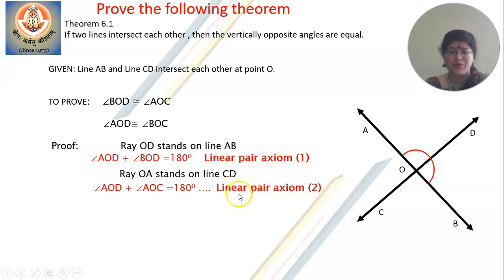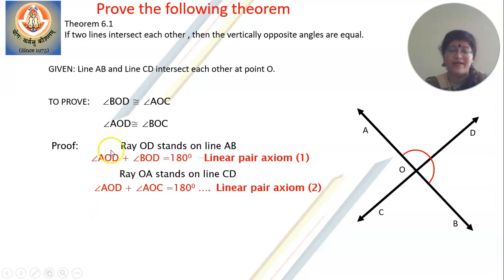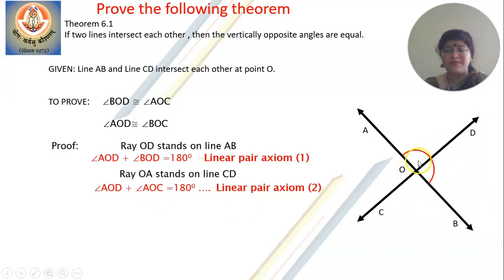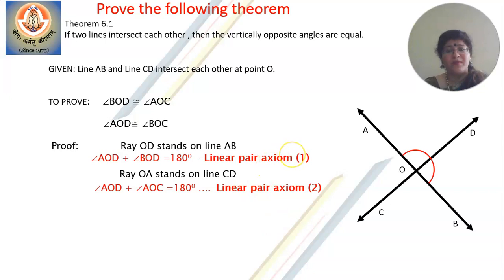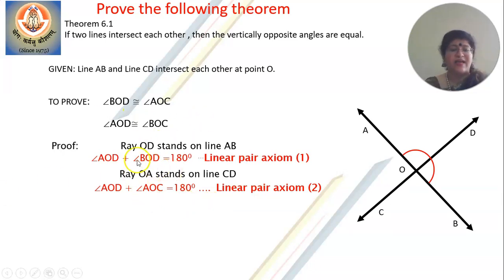Now, compare statement 1 and 2. I told you to repeat any one of the angles — haven't I repeated angle AOD? AOD is there in the first step and also in the second step. You could also take BOD in the next step — then the statement would be BOD plus BOC equals 180. So the first thing to remember is: take any two angles which form a linear pair, then in the next step repeat any one of the angles. Here I have repeated angle AOD.